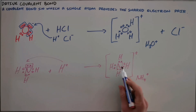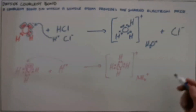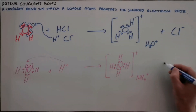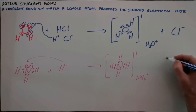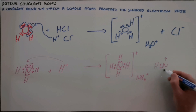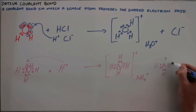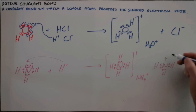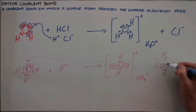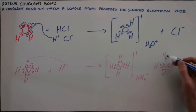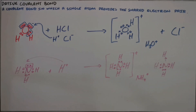It's important to note that we sometimes indicate a dative covalent bond by drawing an arrow. That arrow shows us that we have formed a bond that is not like our traditional covalent bonds. It shows us that the shared electron pair in this bond is provided by nitrogen to hydrogen.